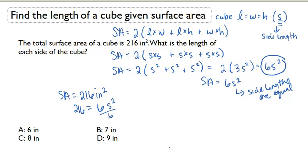If we want to solve for S, we would just divide both sides by 6. So 216 divided by 6, we get 36. I'm going to write that over here. 36 equals S squared. And if I take the square root of 36, I get S equals 6.